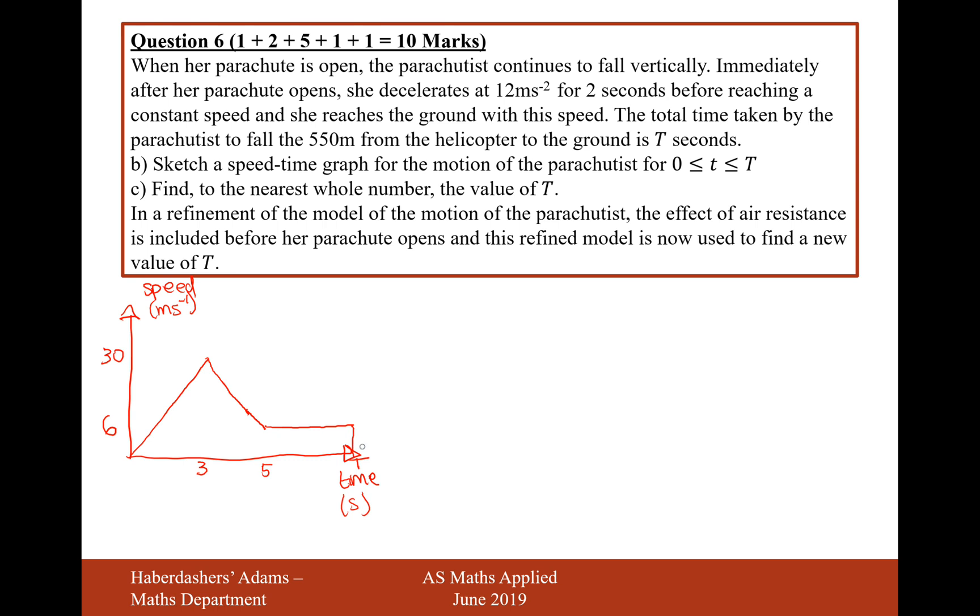Now, the total of this is going to be 550 meters. So part C is find to the nearest whole number the value of T. So it's going to be the area underneath the curve that's going to equal 550. In the left-hand triangle, that's going to be base of 3, height of 30, so that's going to be 30 times 3 divided by 2. That'll be the first calculation. The next bit's going to be a trapezium, so that's going to have an average height of 30 plus 6 divided by 2. That's the average heights on these lines here, the parallel sides there, and a height of 2, so we'll times that by 2. And then it's going to be plus this value here, so that's going to be T minus 5. In fact, no, I won't work it out like that. I'll just put X here for now. So it's going to be X times the height of 6, so 6X. And that's going to equal 550.